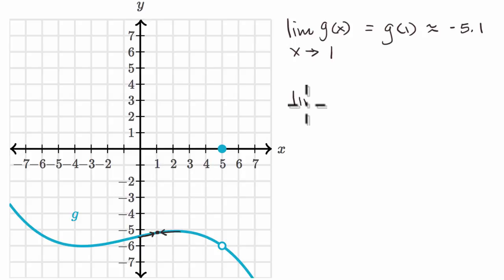We could find the limit of g of x as x approaches pi. So pi is right around there. As x approaches pi from the left, we're approaching that value, which looks actually pretty close to the one we just thought about. And as we approach from the right, we're approaching that value. And once again, in this case, this is going to be equal to g of pi. We don't have any interesting discontinuities there or anything like that.